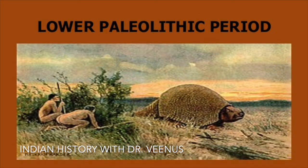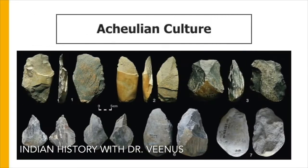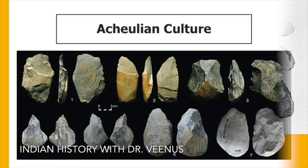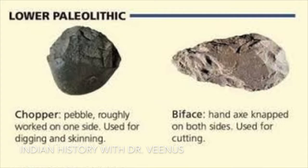Traditionally, the Indian Lower Paleolithic has been divided into two tool traditions. The Soan culture was represented by pebble-based tools called chopper-chopping tools, and the Acheulean culture was characterized by tools called hand axes and cleavers. Most of the tools were bigger in size and used for chopping, digging and skinning of animals.